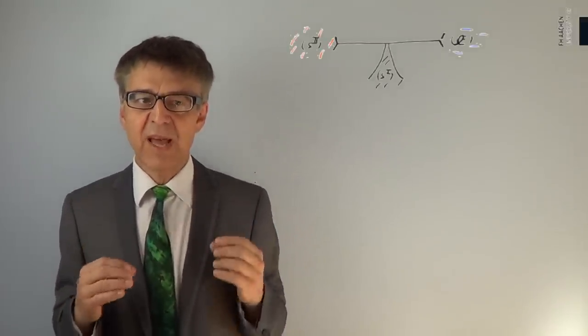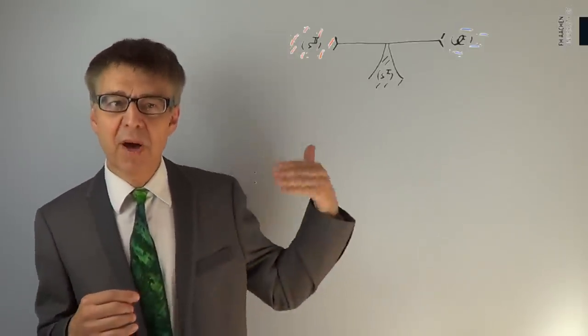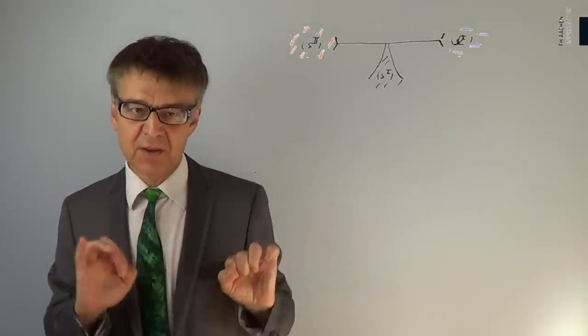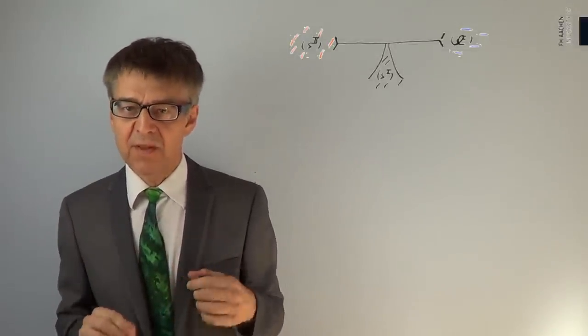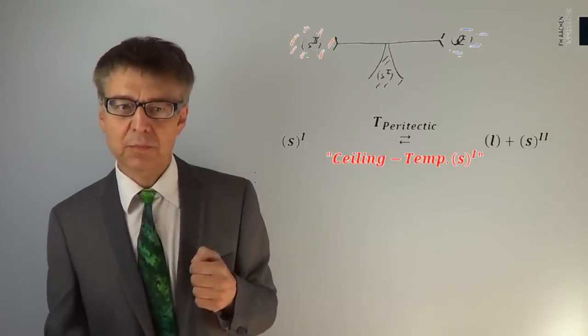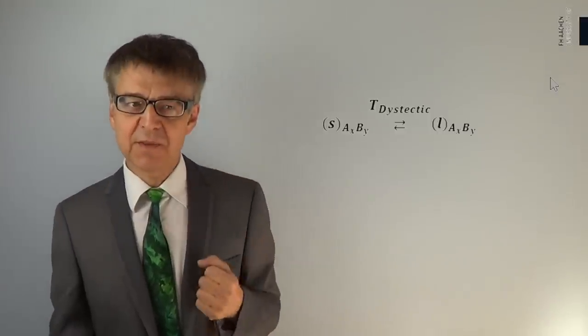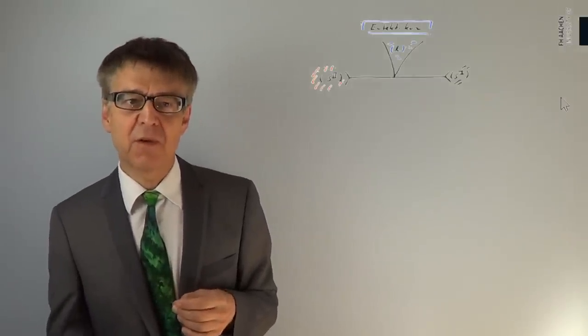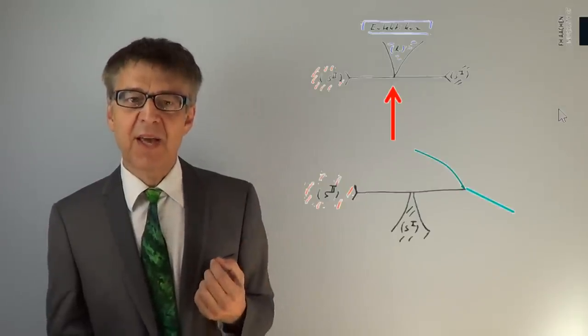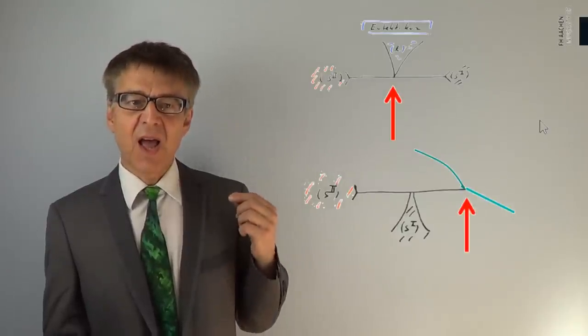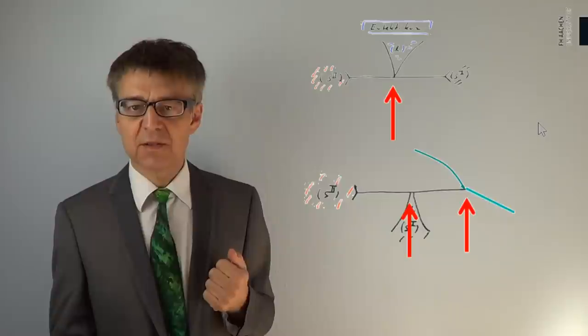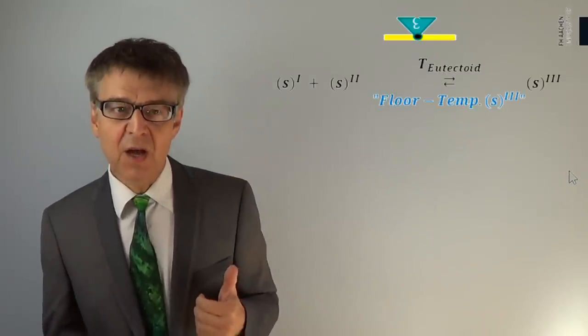Conversely, at a so-called peritectic, a solid phase is no longer stable above a certain temperature and decomposes into another solid phase and a liquid phase with a different composition. This is also called incongruent melting. With congruent melting of a solid compound, we find the dystectic. With congruent melting, the solid compound formed of A and B melts to a homogeneous liquid phase with the same composition. We can tell a eutectic by the V-shaped structure of the liquidus. We can tell a peritectic by a kink in the liquidus and the roof-shaped or T-shaped structure of the solidus. If these structures occur and only solid phases are involved, we speak of a eutectoid or peritectoid.